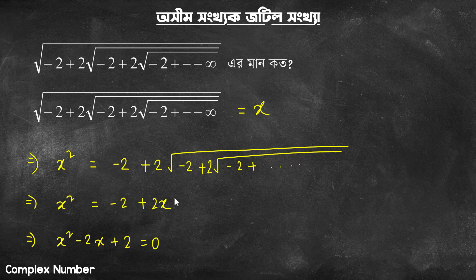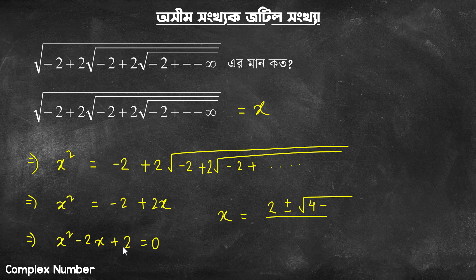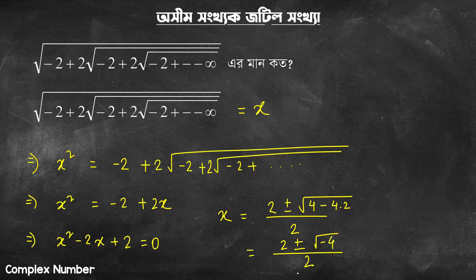So x squared minus 2x plus 2 equals 0. We solve: minus b plus or minus root over b squared minus 4ac. b squared value is 4. So 4 minus 4ac, where 4ac is 4 into 2, divided by 2a. That means root over of negative 4 divided by 2. Root of negative 4 is twice i. So x equals 1 plus or minus i.